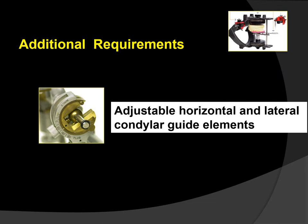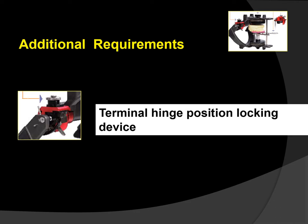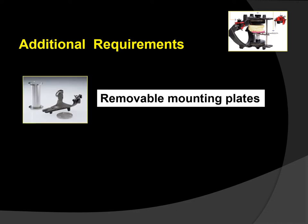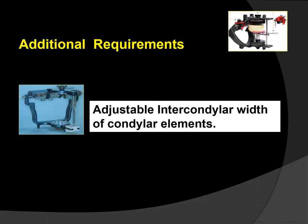The additional requirements of an articulator are: adjustable horizontal and lateral condylar guide elements; a mechanism to accept a third reference point from a face-bow transfer record; a terminal hinge position locking device; removable mounting plates that can be repositioned accurately; an adjustable incisal guide table; and adjustable intercondylar width of the condylar elements.